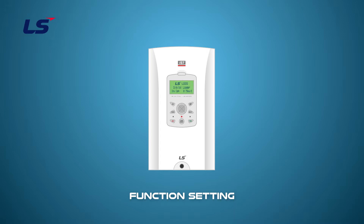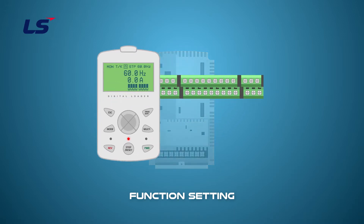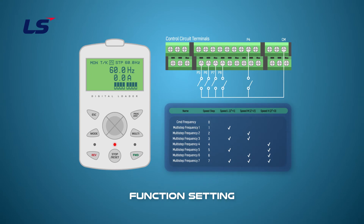The settings for multi-function terminals Speed-L, M, and H operate by binary sequences. The following table shows the input sequence for each single digit. You can also check it on the keypad display. When terminal P5 for multi-step frequency, which is Speed-L, is ON, it is step frequency 1. When terminal P6, which is Speed-M, is ON, this is step frequency 2. The control is determined by the input combinations of the terminals. Additionally, to implement step frequencies 3, 5, 6, and 7, turn on the combinations of terminals P5, P6, and P7.